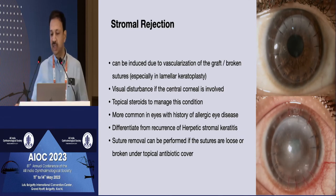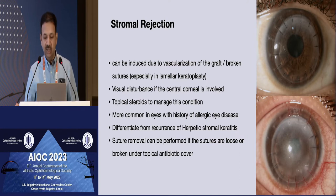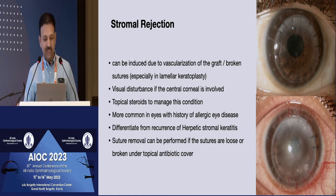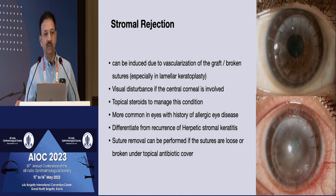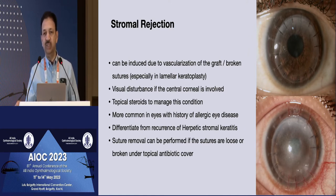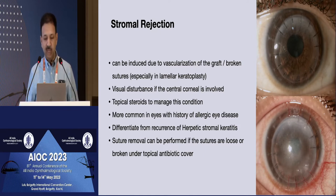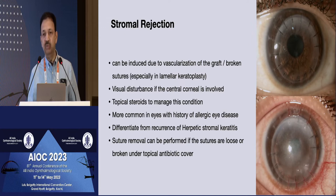Stromal rejection can occur with anterior lamellar keratoplasty if the predisposing factor is loose sutures or if the patient has a previous history of active chronic allergic eye disease. Usually the patient will come back only if there is involvement of the visual axis and a drop in vision — they don't produce as many symptoms as endothelial rejection. Any persisting redness or foreign body sensation should not be treated just by increasing lubricants; timely intervention with a little more steroids can effectively manage stromal rejection. Any loose or broken sutures must be removed, as steroids alone won't solve the problem.